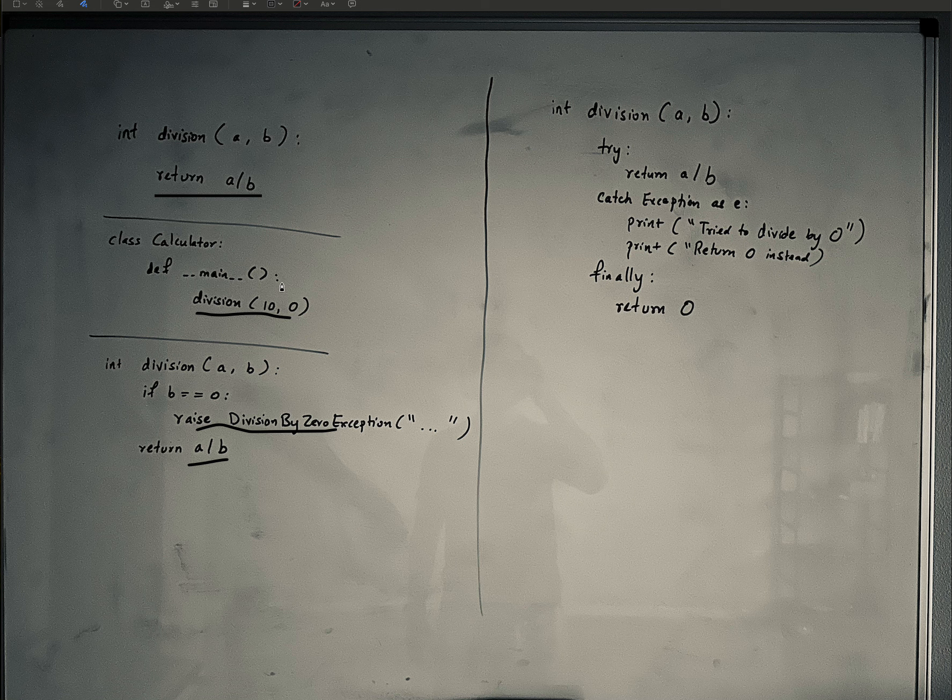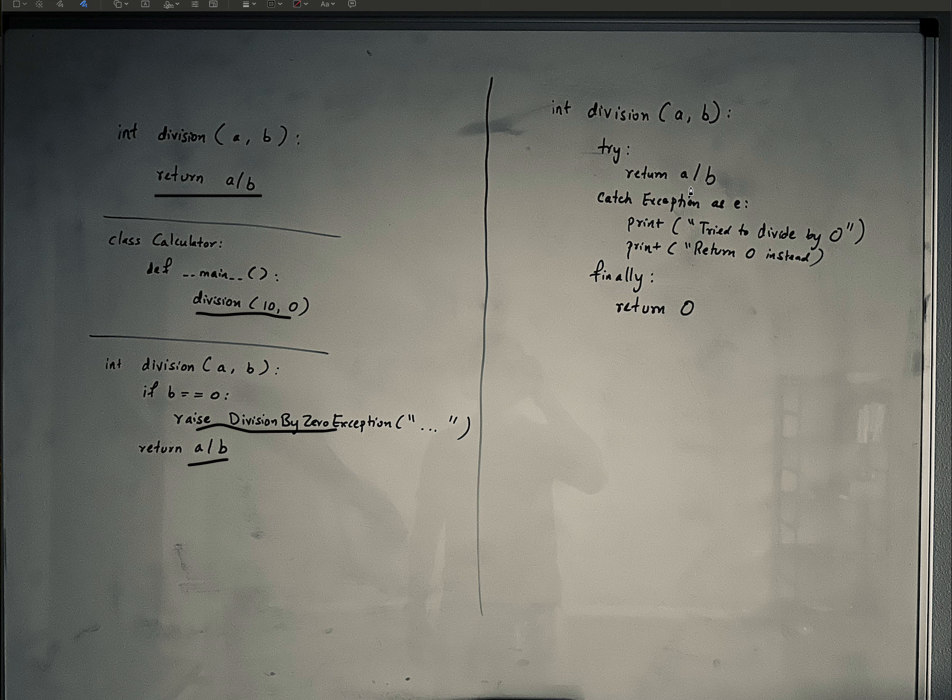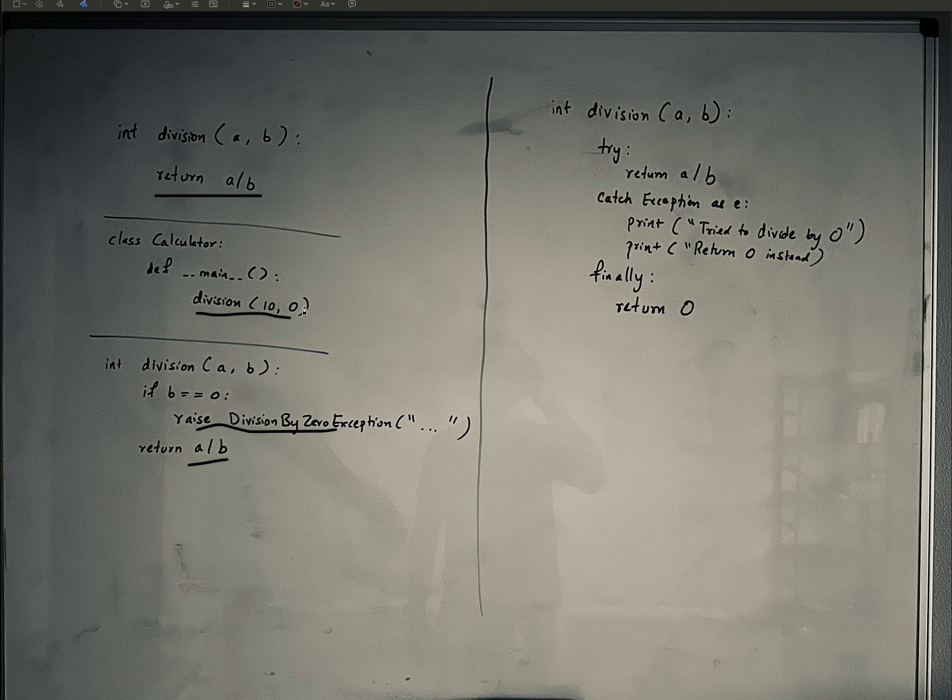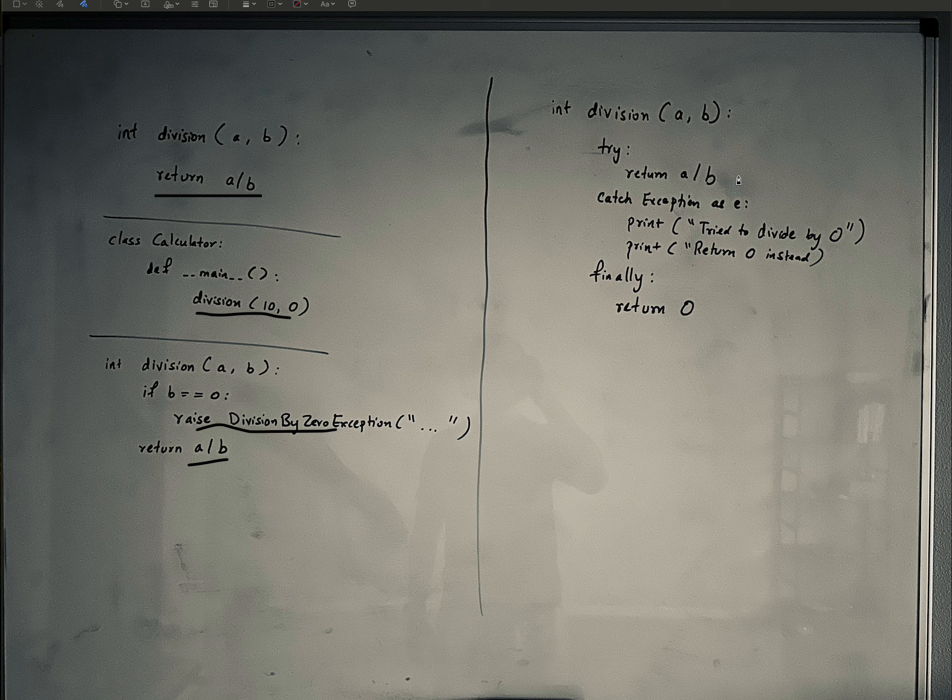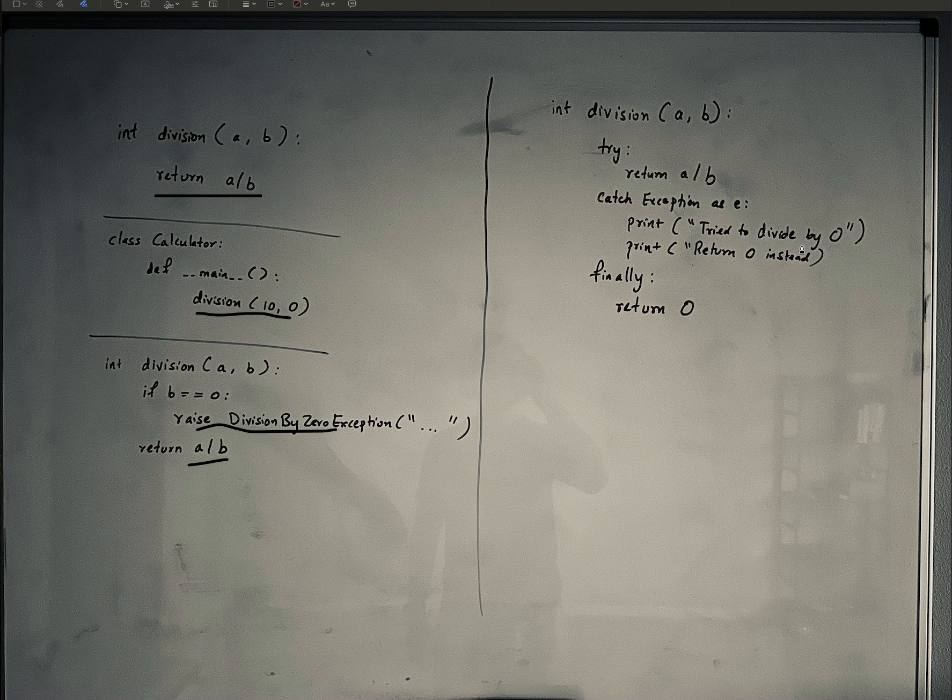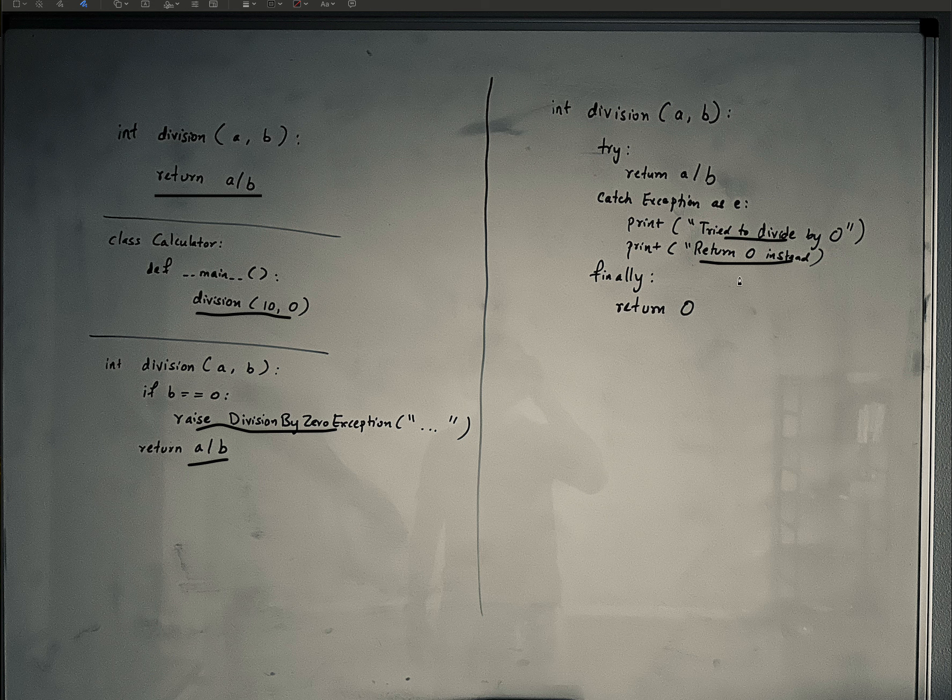But say you pass in 10, 0. In that case, because a divided by b will throw an exception. When your code does not work successfully, it always throws an exception. And when it tries to throw this exception, you will catch it in your code and put out print statements that say, if you try to divide by zero, I'll just return zero instead.